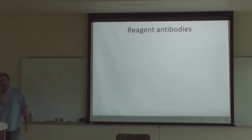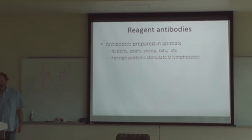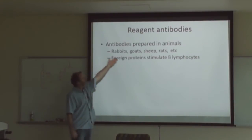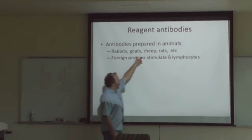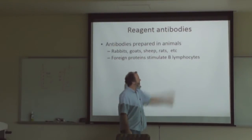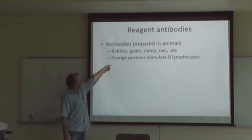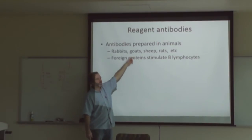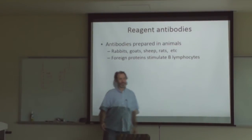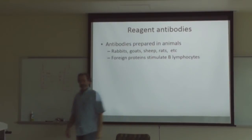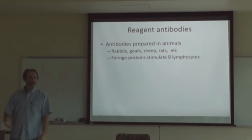How do we prepare antibodies? We can prepare them in animals — rabbits, goats, sheep, rats, etc. Foreign proteins, when we inject them in these animals, will stimulate the B lymphocytes, and those will start to produce antibodies.